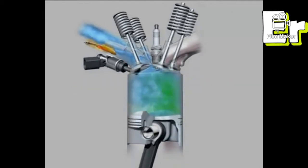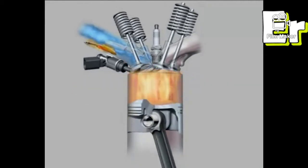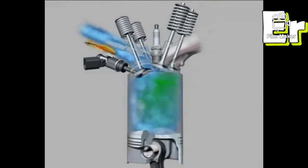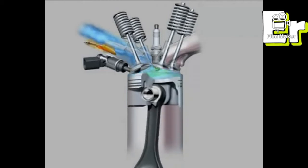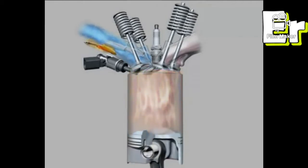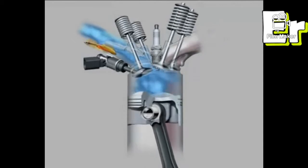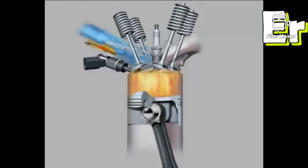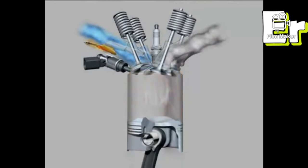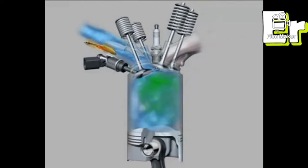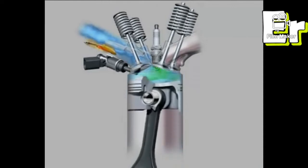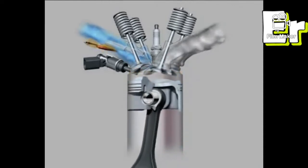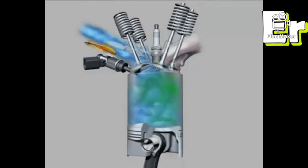The ignition lag will be constant across all rev ranges of the engine. So for producing the maximum pressure at the end of the combustion stroke, we have to produce the spark earlier than TDC, or top dead center. This phenomenon is called spark advance. With respect to the RPM change of the engine, we have to change the time when the spark is initiated to generate the pressure inside the combustion chamber at the time of the power stroke.